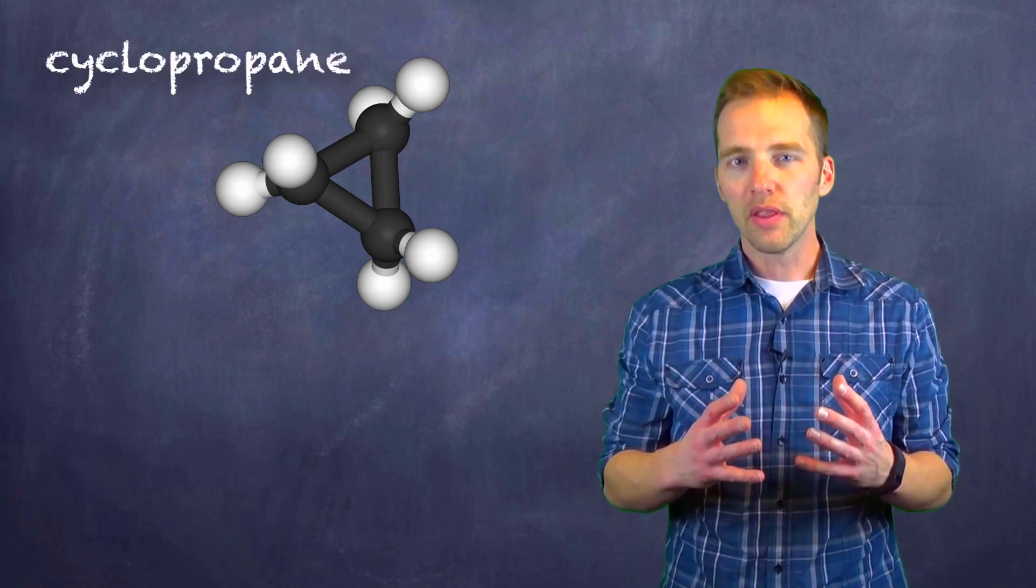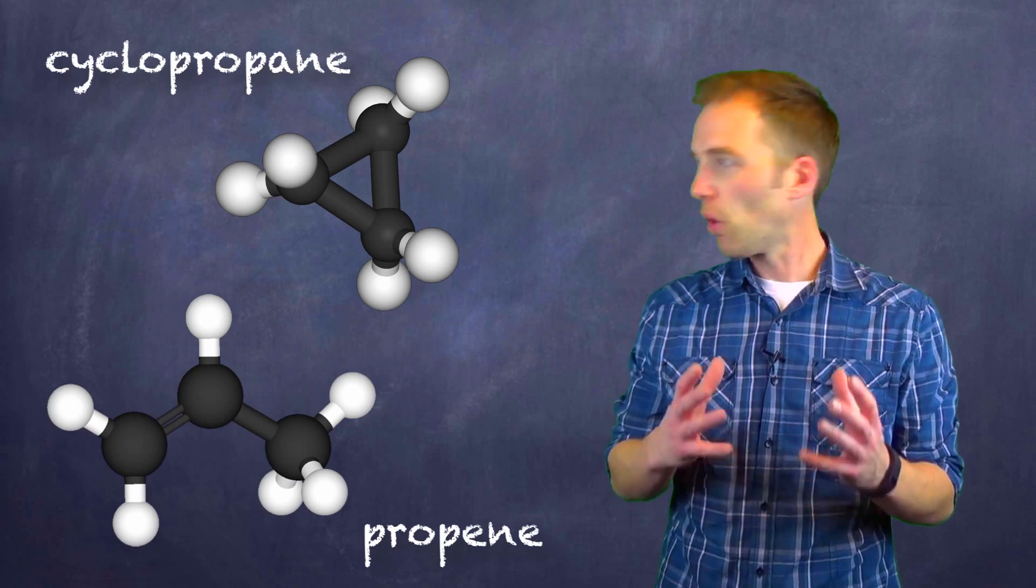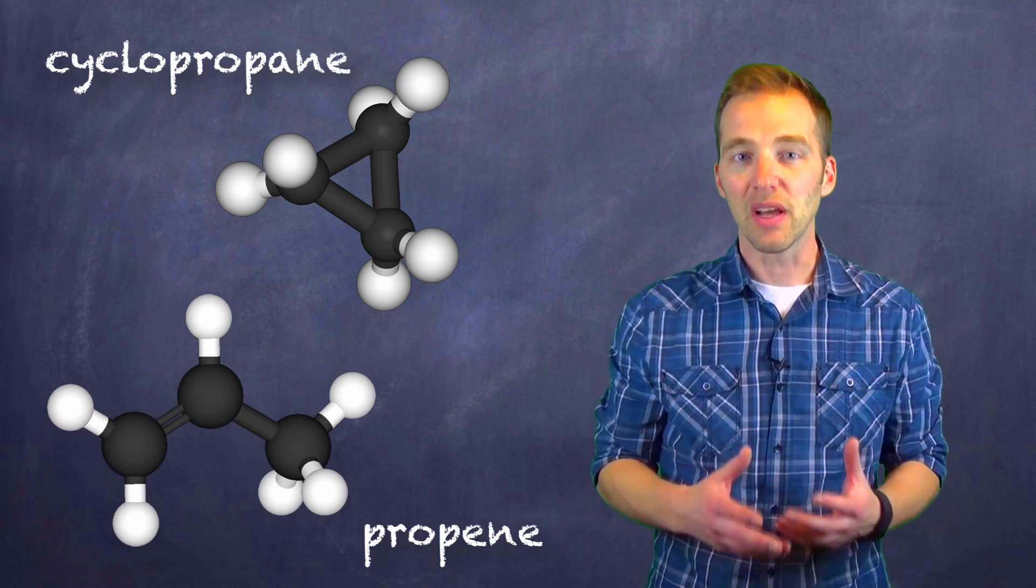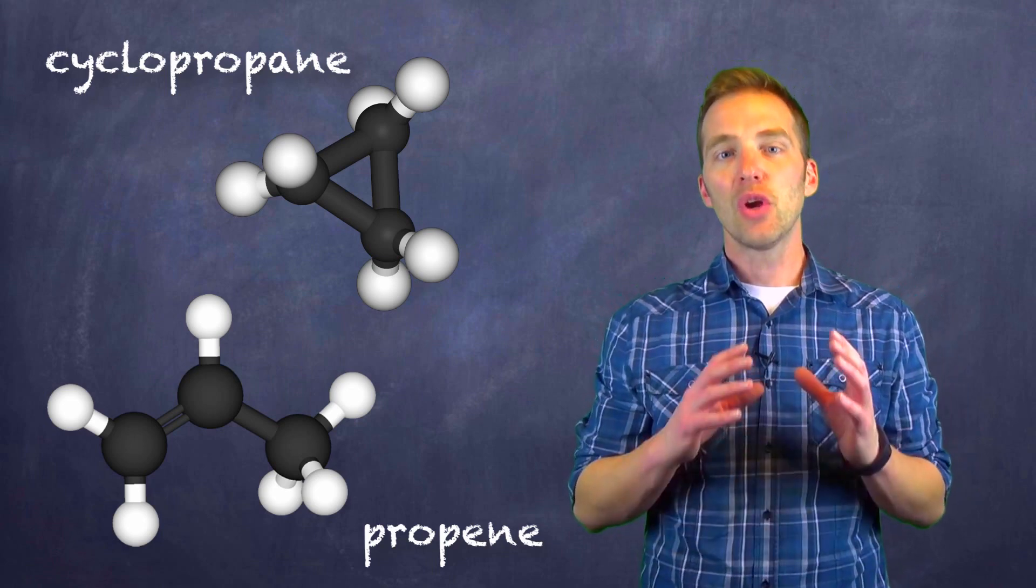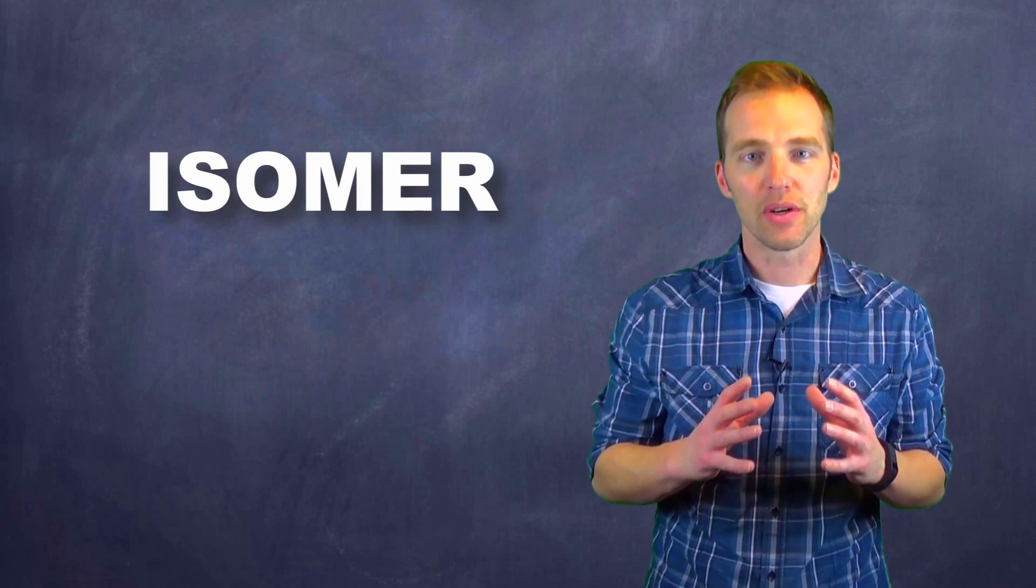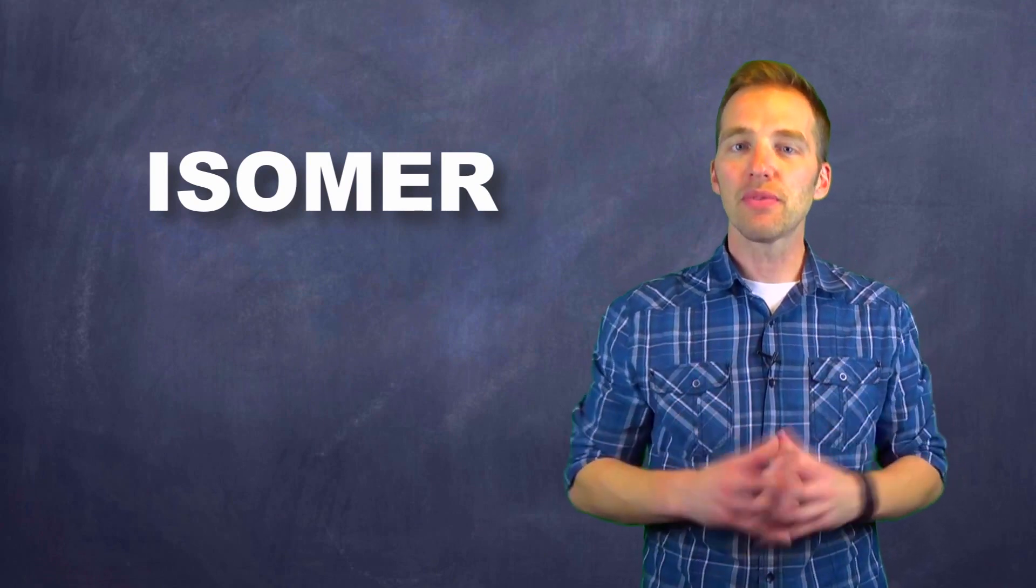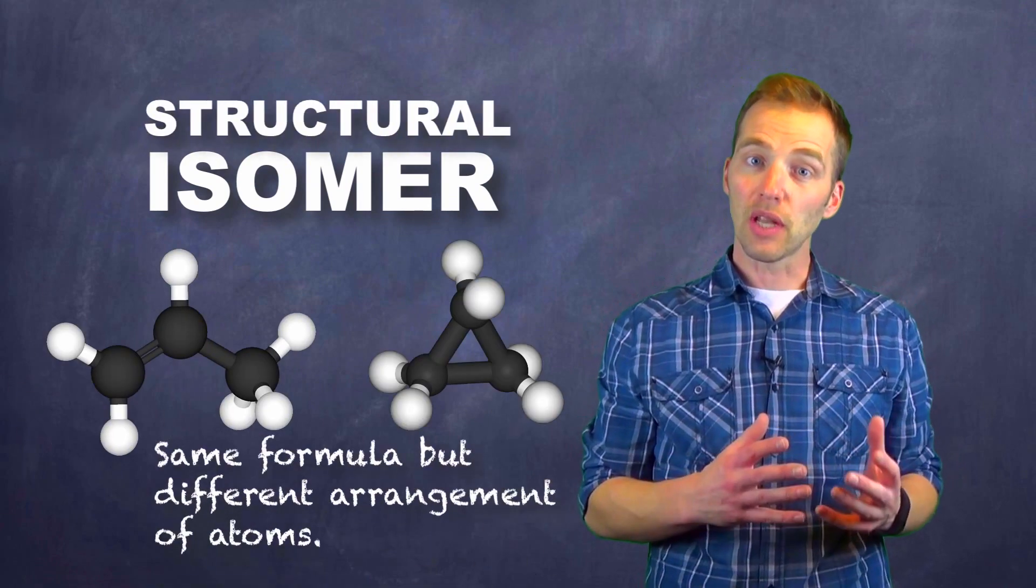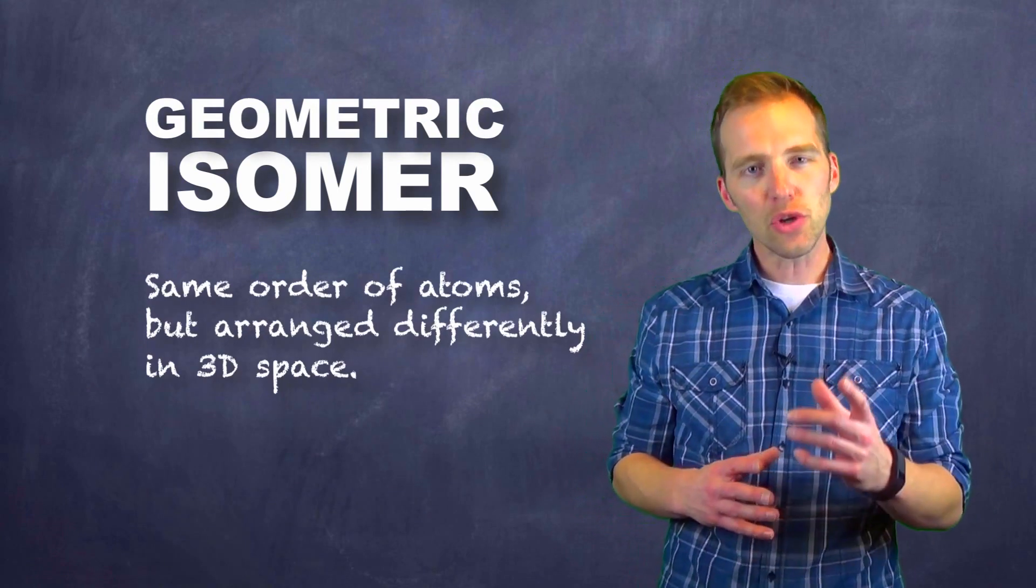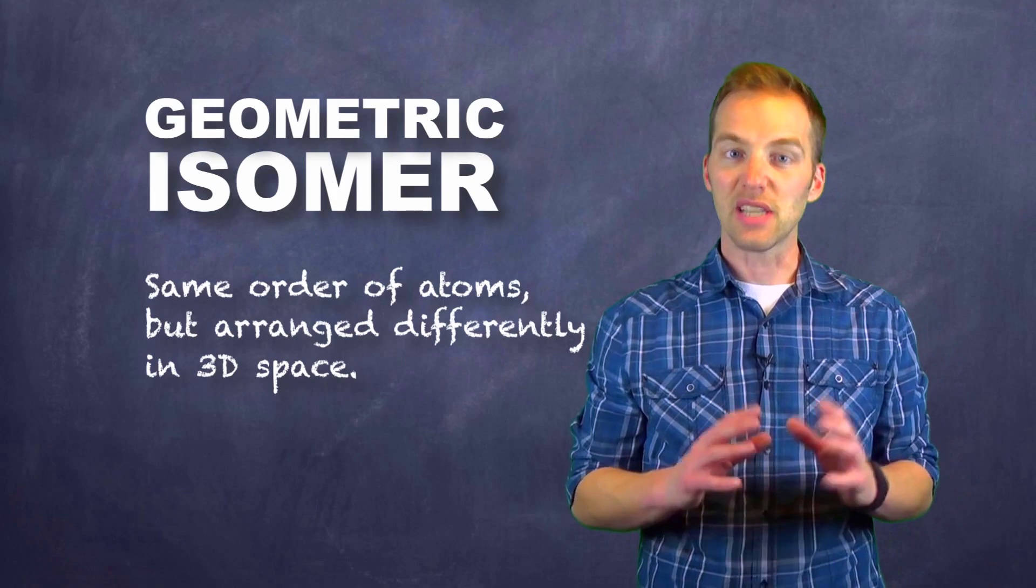Now even though the molecules themselves, propene and cyclopropane, have the same molecular formula, they have different structures with different properties. In fact, we have a term for this, and that's isomer. Now there are two different types of isomers. There are structural isomers, like these, and then there are geometric isomers. So let's go back and take a look at one of those model kits to help us out with that.